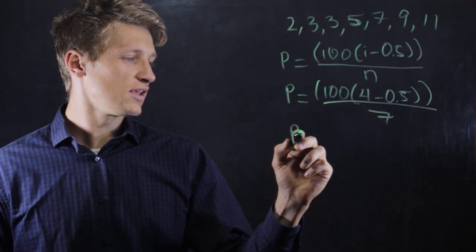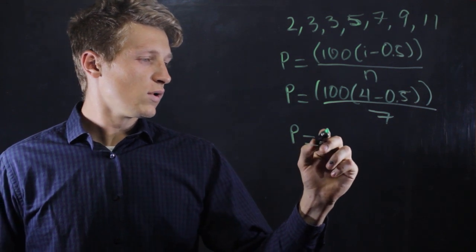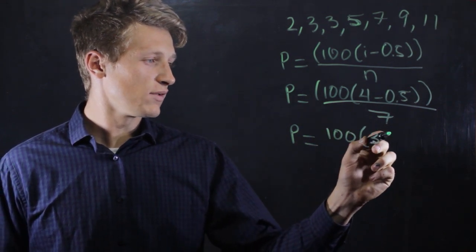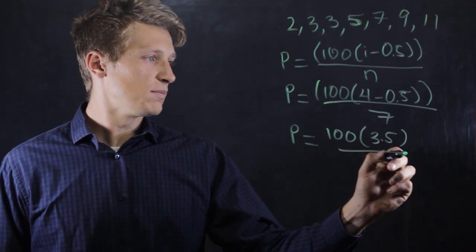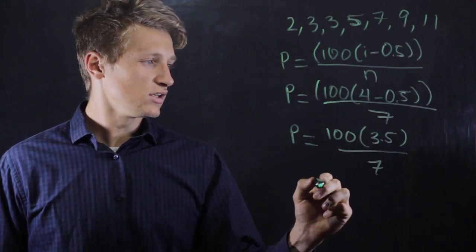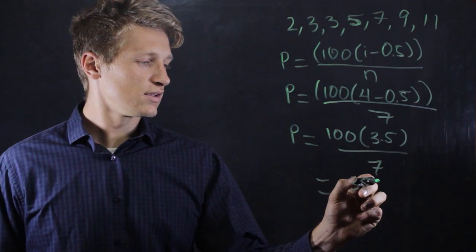So here we have p equals 100 times 3.5 divided by 7, which equals 350 divided by 7, equals 50.